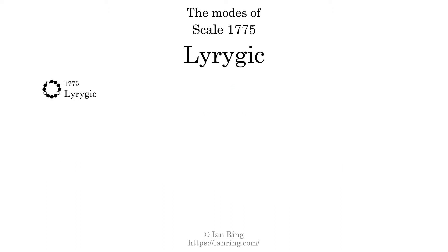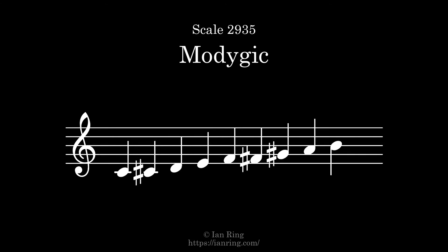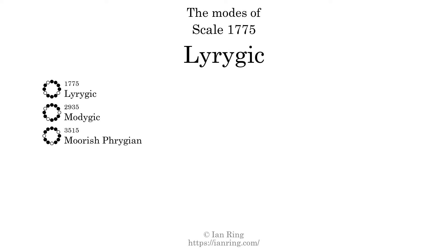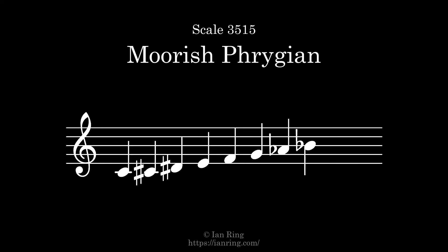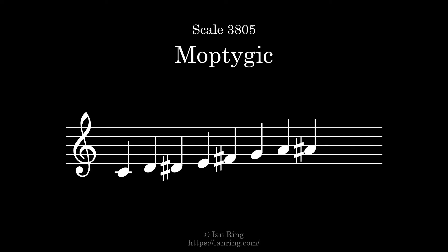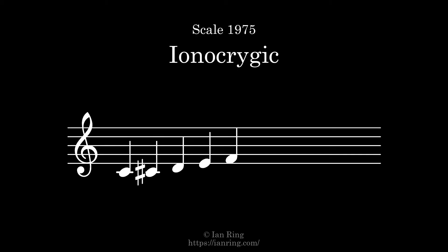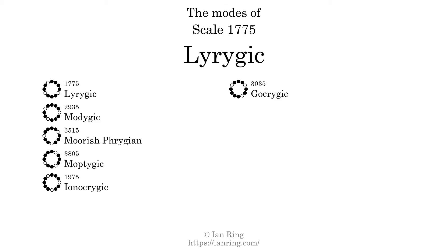This scale has 9 modes. The first mode is itself. The second mode is scale 2935, also known as Midicritic. The third mode is scale 3515, also known as Moorish Phrygian. The fourth mode is scale 3805, also known as Moorish Phrygian. The fifth mode is scale 3035, also known as Moorish Phrygian. The sixth mode is scale 3035, also known as Moorish Phrygian. Each mode sounds like this.